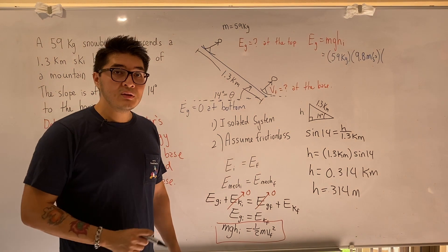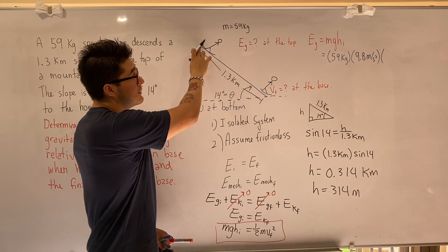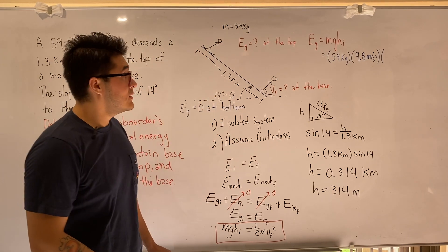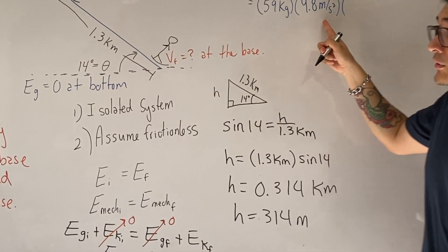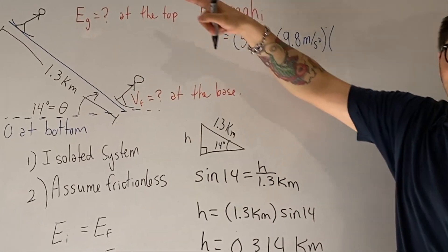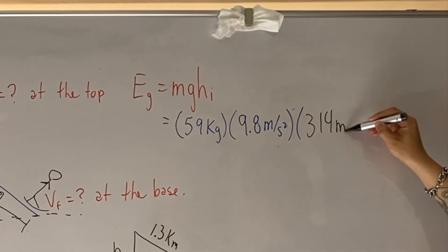So we can rewrite this in terms of meters by multiplying by 1,000. So we get 314 meters for the height. Because potential energy does not care about the path taken, it only cares about the change in height. That's why we found the h. So we can plug it back into our equation from before to find the potential energy at the top.